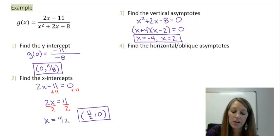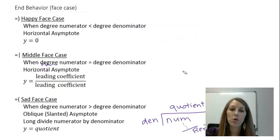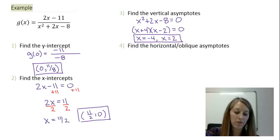To find the horizontal or the oblique asymptotes, we do that, that is the end behavior of the graph, by looking at our face case. Let's review that. We determine which case we are in by looking at the degrees of the numerator versus the degrees of the denominator. Let's go back and review.